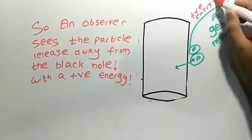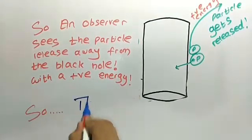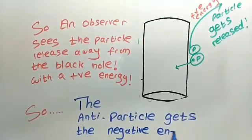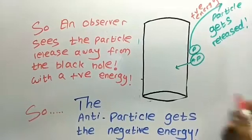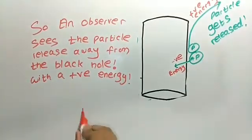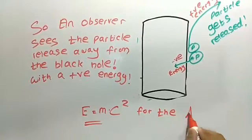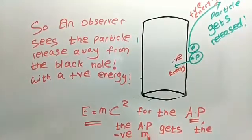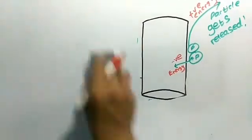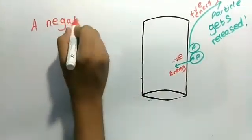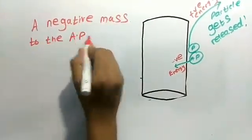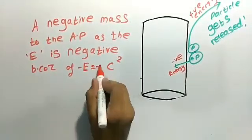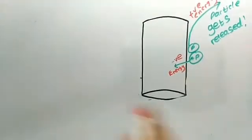The particle gets positive energy and as the anti-particle is absorbed by the black hole, it gets negative energy. Since there are particles and anti-particles, we can use the formula E equals mc squared. For the anti-particle, since the energy is negative, the mass also gets negative according to E equals mc squared. So minus E equals minus mc squared.